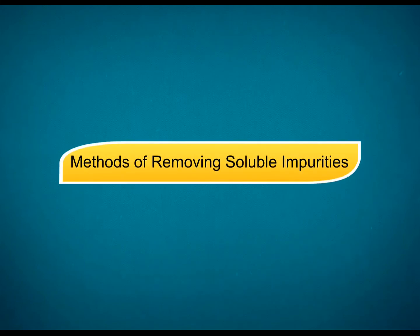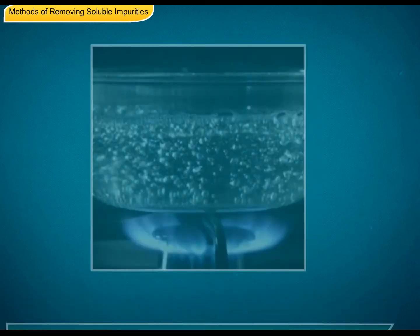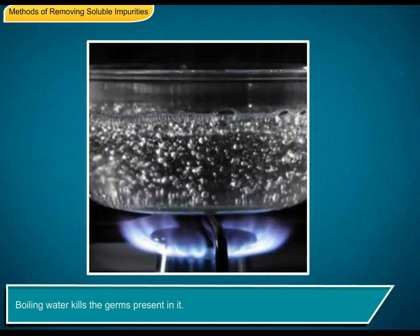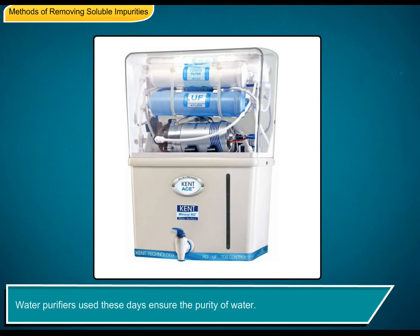Methods of removing soluble impurities. Even after filtration, water may contain germs and be unfit for drinking. Germs can be removed in the following ways. Boiling water kills the germs present in it. Chlorination is the process of adding a chemical called chlorine to the water; it helps to kill the germs present in the water. Water purifiers used these days also ensure the purity of water.